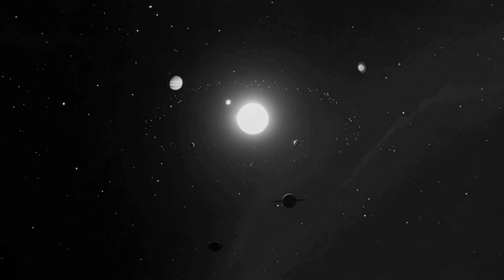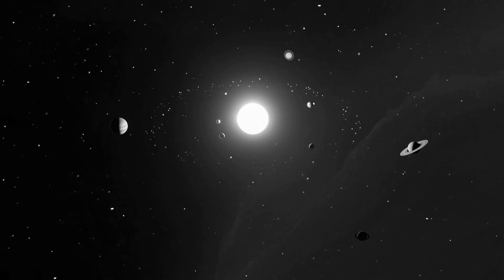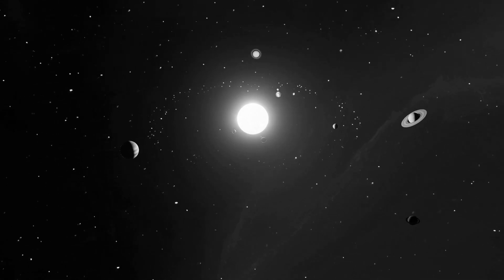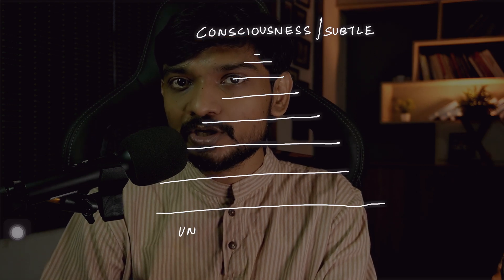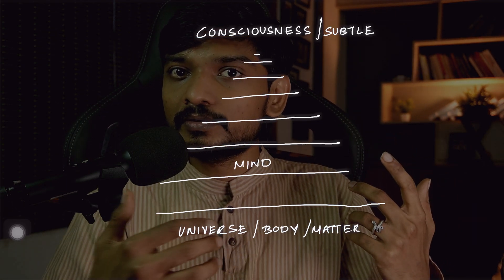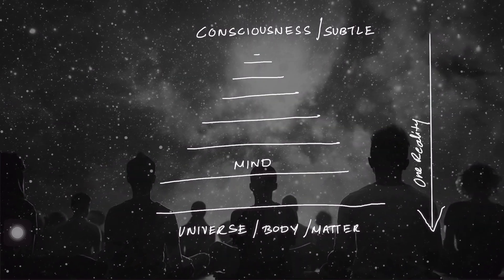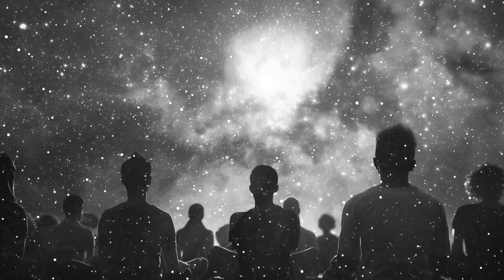Before we go ahead, let us briefly cover the premise of Advaita Vedanta and how it looks at reality. As per Advaita Vedanta, the entire universe and everything that we see is one reality. It is one infinite consciousness that appears to be many. That one infinite consciousness has expressed itself in infinite ways, in infinite dimensions, in infinite levels, from the most subtlest to the most grossest. That one consciousness has manifested at different levels.